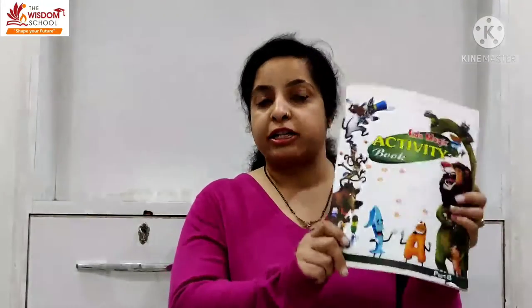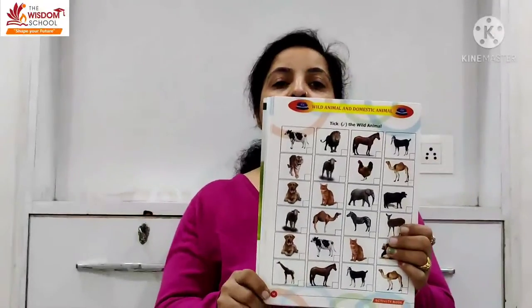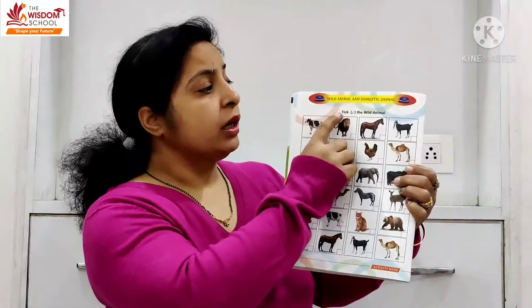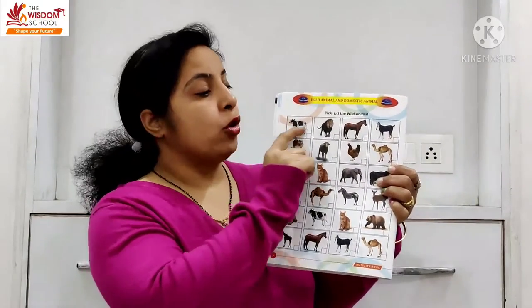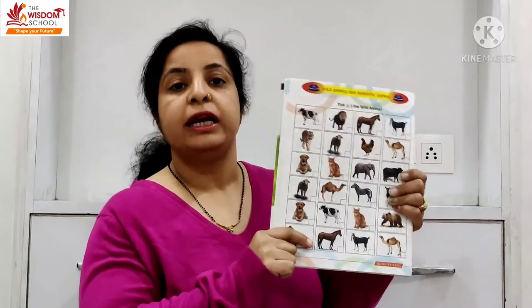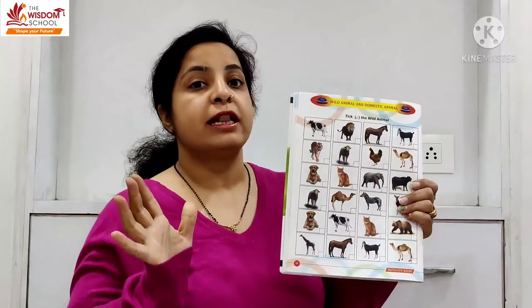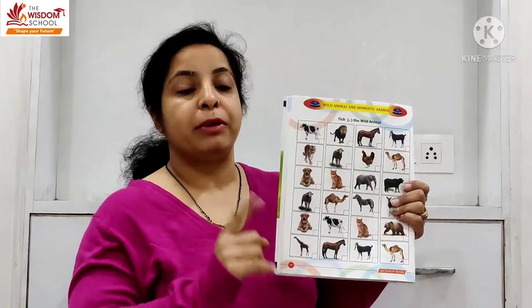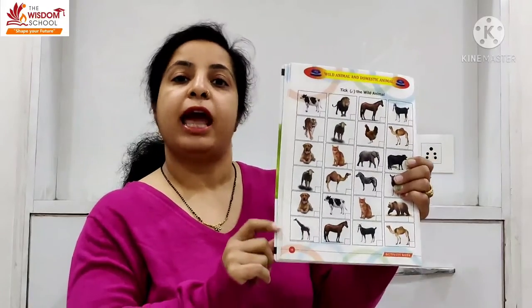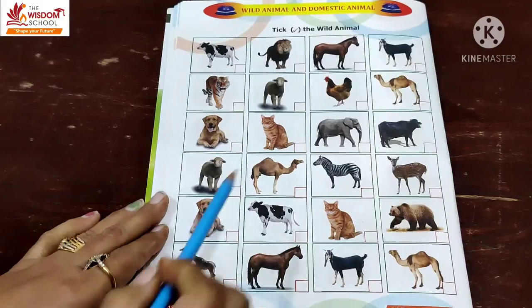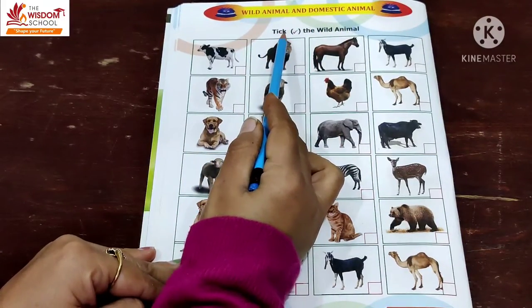So today, where is your activity book? This is page number 12. The topic name is 'Tick the Wild Animals.' Here you have domestic animals and wild animals. You have to identify only the wild animals. What do we need to do? Tick the wild animals.